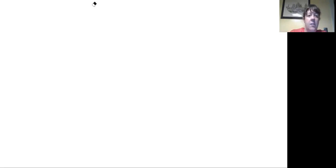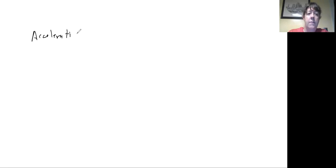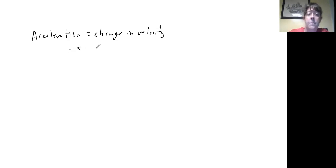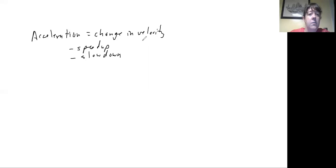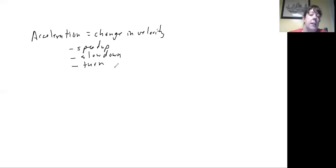We're going to start by talking about acceleration, which is the next topic in physics. Acceleration, put simply, is a change in velocity. There are three ways that velocity can change: velocity can change when we speed up, when we slow down, or because velocity is a vector — it has magnitude and direction — velocity changes when we turn. We'll talk about circular motion later in the course.